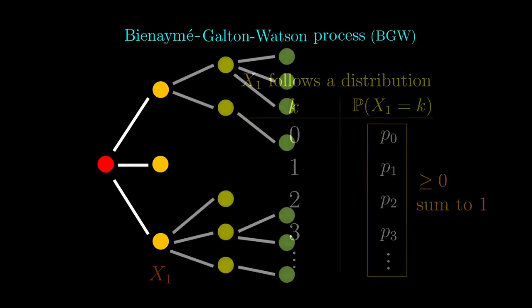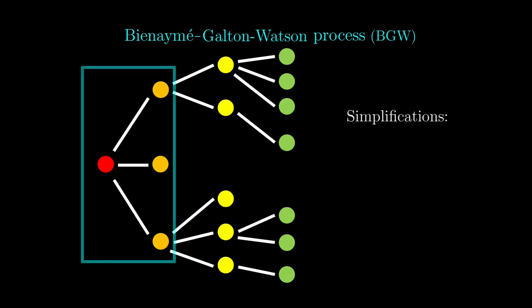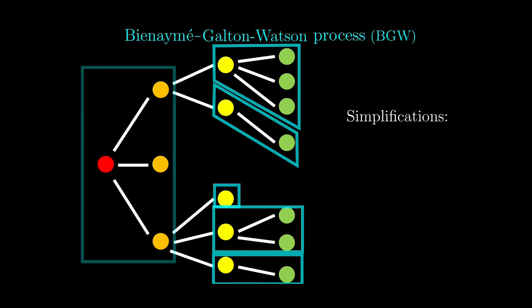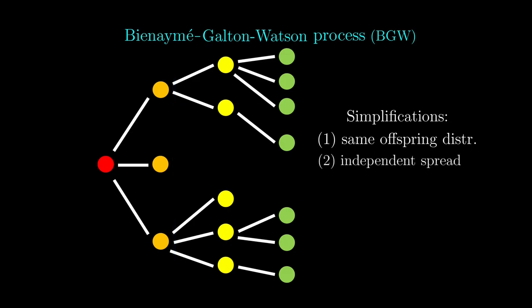The reason why this BGW process is the simplest branching process is that it assumes two things. Each branching that you see here are all the same, which means it all follows the same distribution as the first branching, so they are said to have the same offspring distribution. The second simplification is that it assumes each individual in the same generation spreads the disease independently.